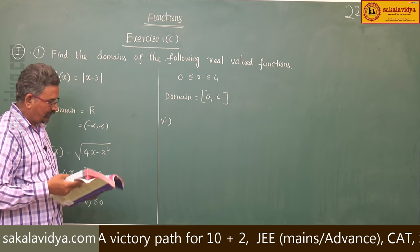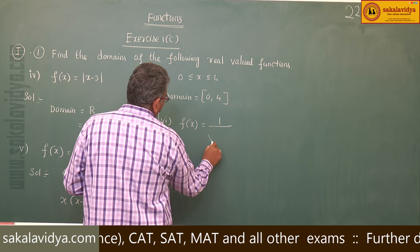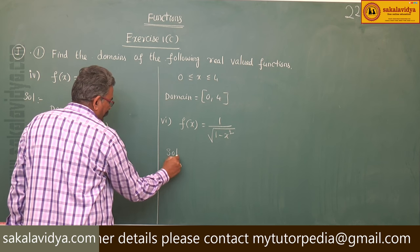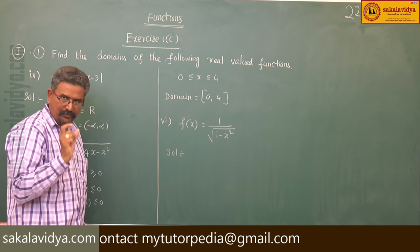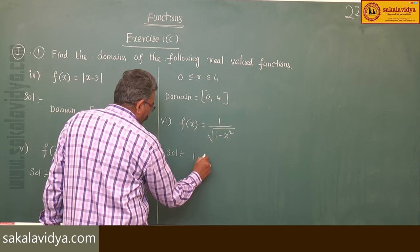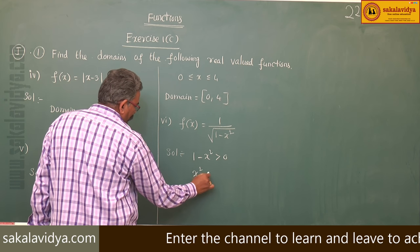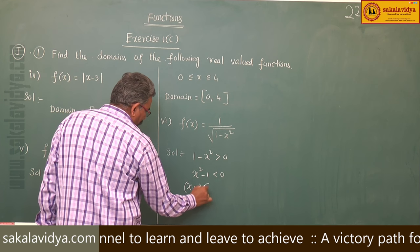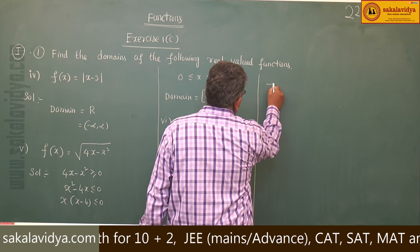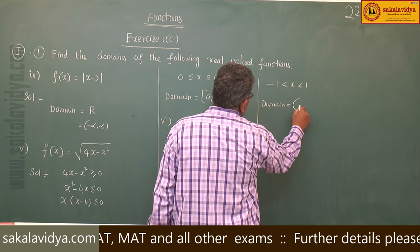Sixth problem: f of x is equal to 1 by root of 1 minus x square. In this case, 1 minus x square must be strictly positive — it must not equal 0. Multiplying by minus 1: x square minus 1 less than 0, giving x plus 1 into x minus 1 less than 0. So x lies between minus 1 and 1, and domain is equal to the open interval (−1, 1).